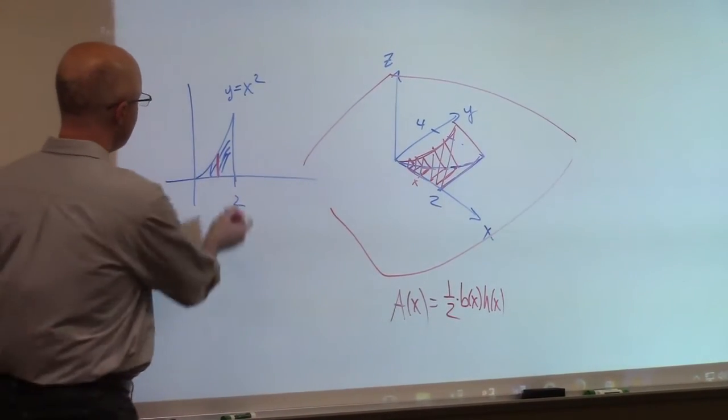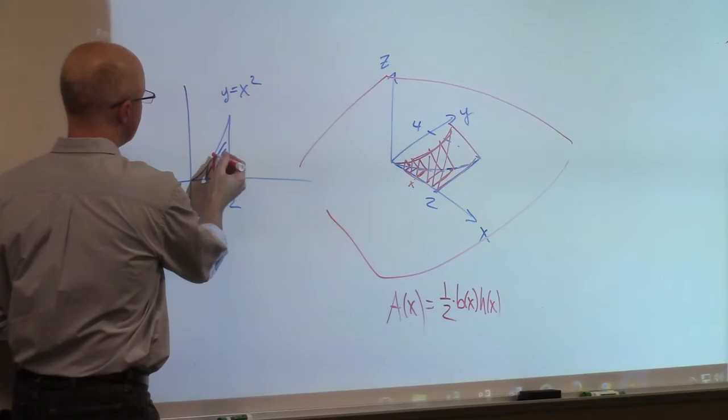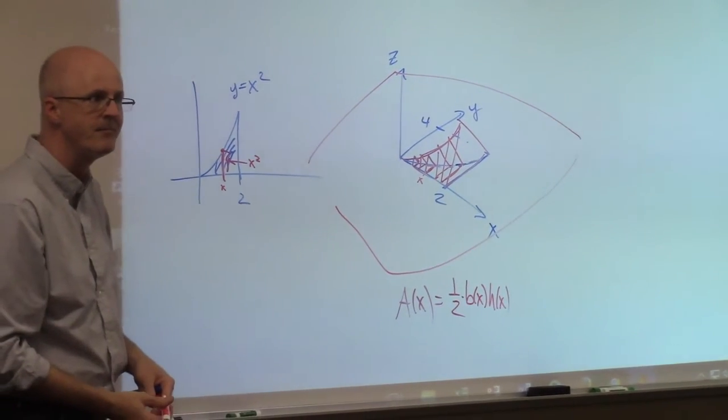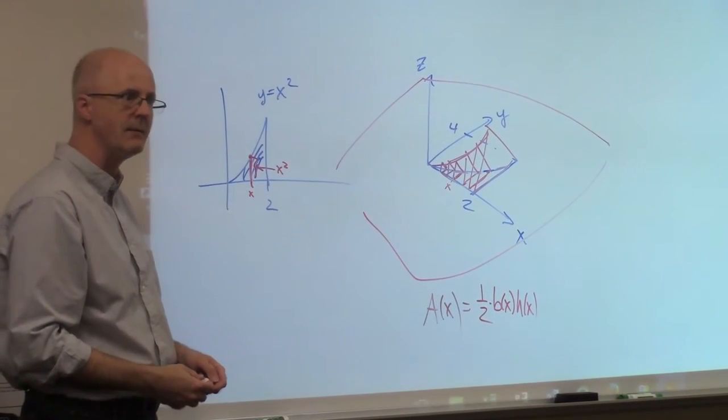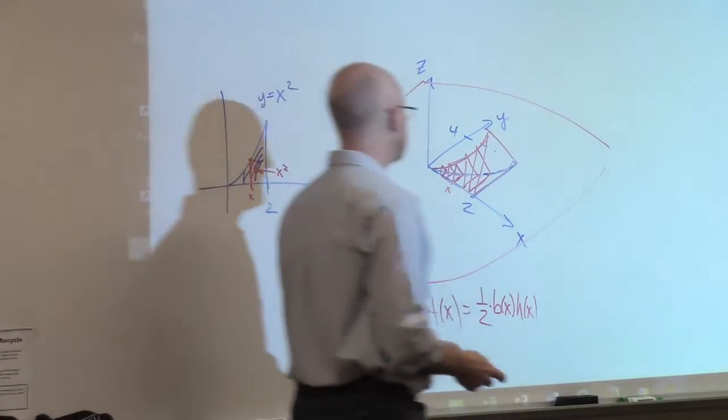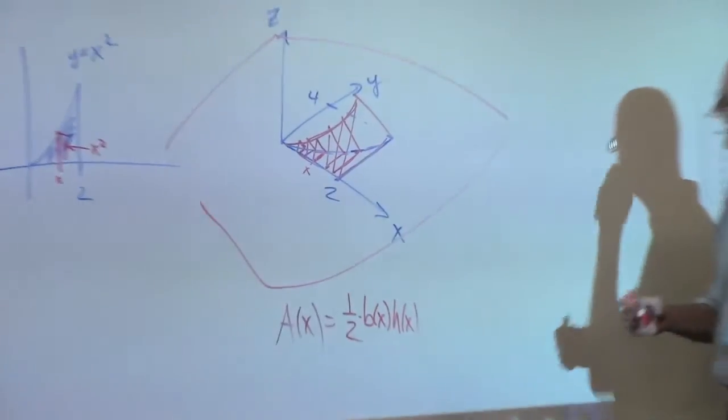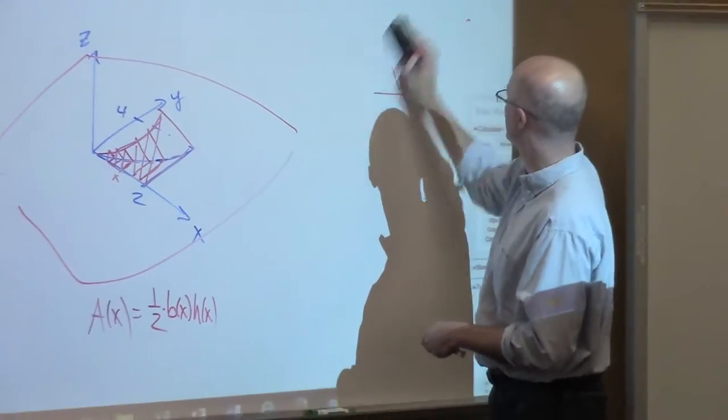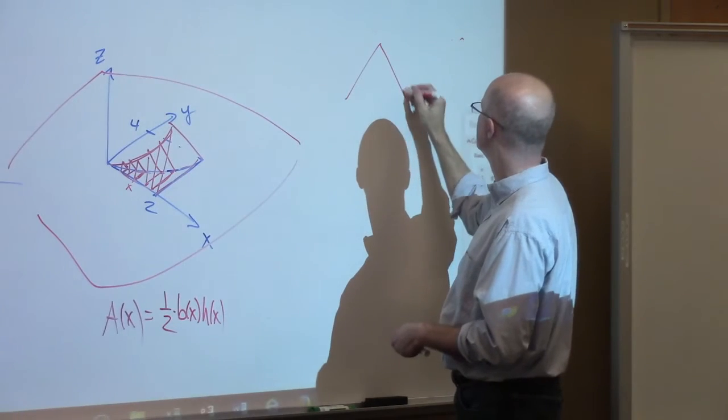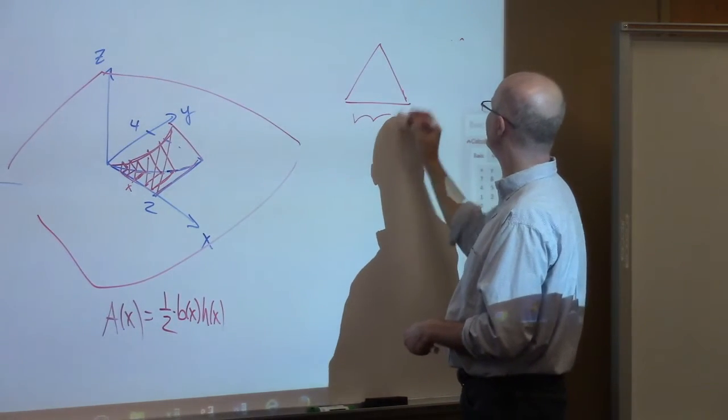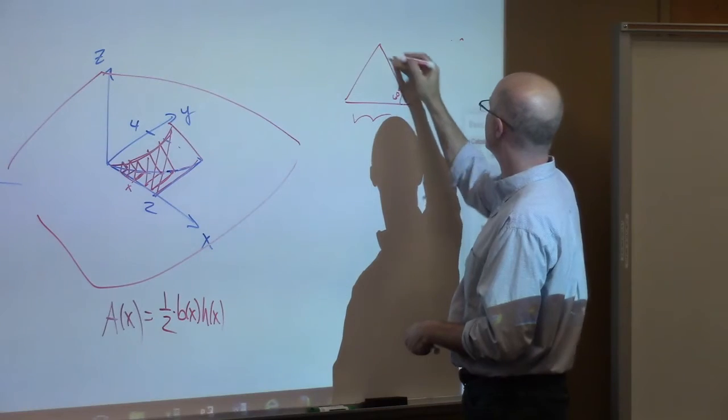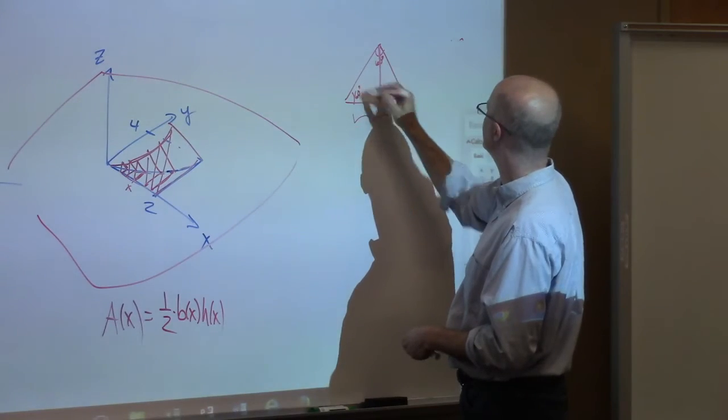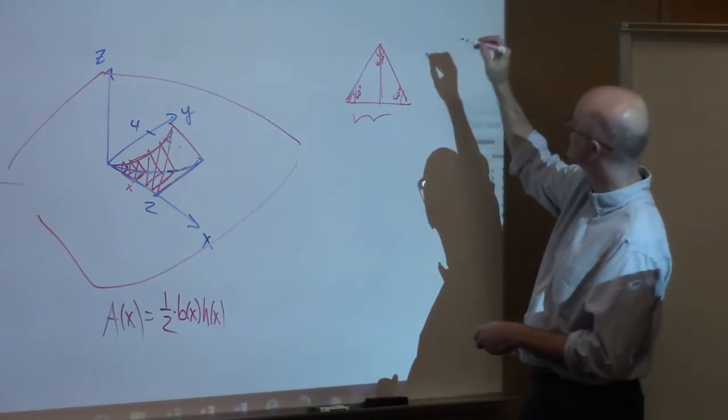Right? For any given x, the value of this distance here, which is x squared, because that's the equation of the curve, is the base of the triangle. What about the height? We're going to need a little Pythagorean theorem to help us find the height here. Think about your typical cross section and try to make your triangle look more equilateral. Okay, pretend that's an equilateral triangle. So these are all 60 degree angles here. Pretend that's equilateral.